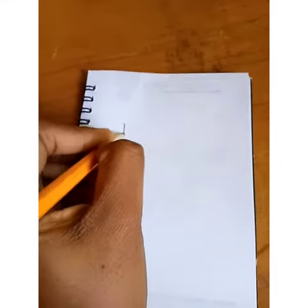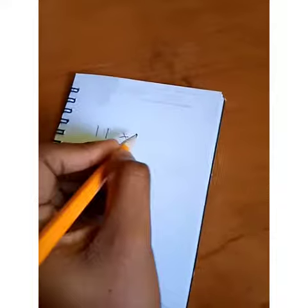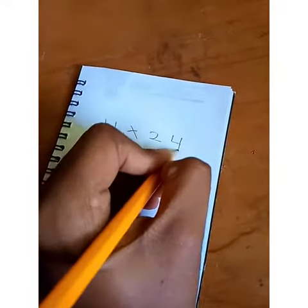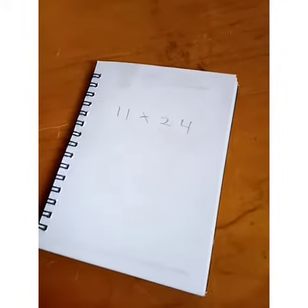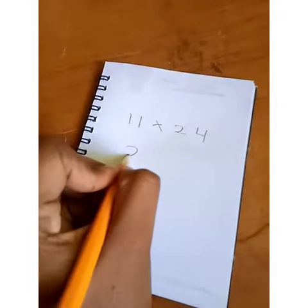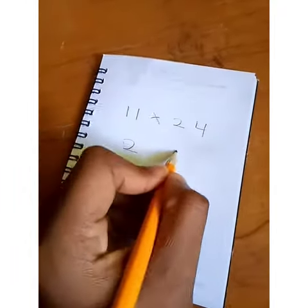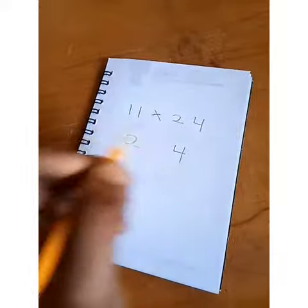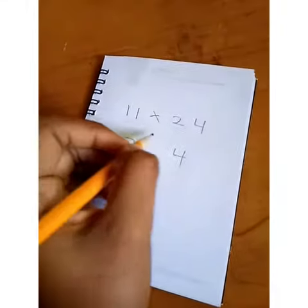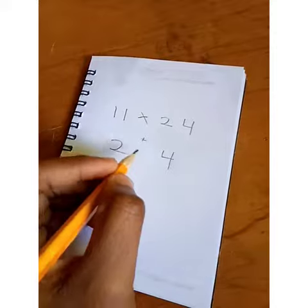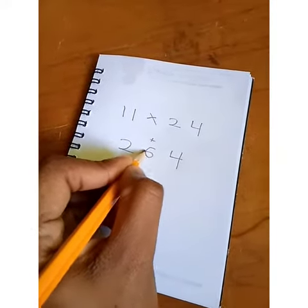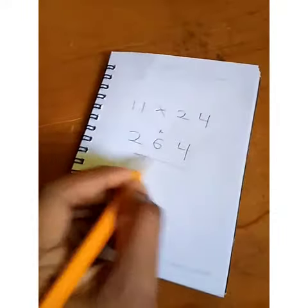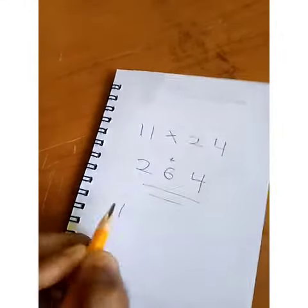we're going to be looking at the multiplication table with 11. Here we have 11 multiplied by 24. You put the 2 and the 4 separate from each other and add them. That's 2 plus 4, which gives you 6. You write the 6 right in the middle, and that is your answer: 264. Easy and simple.